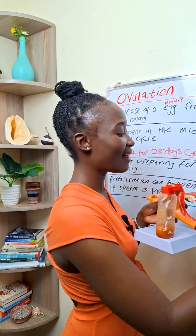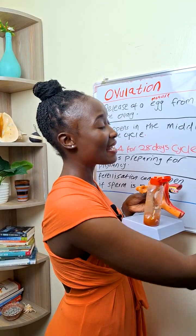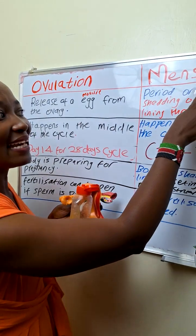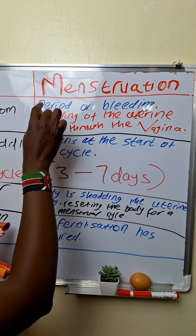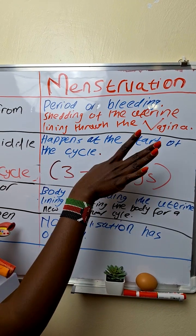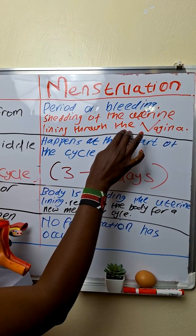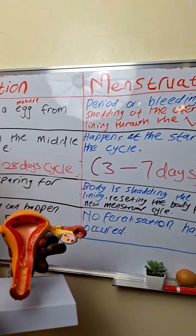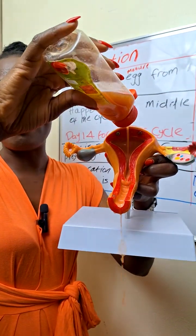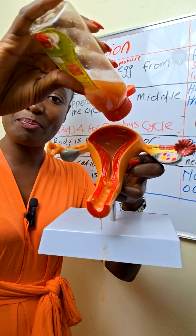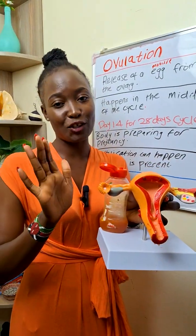On the other hand, menstruation is the bleeding, or the monthly bleeding, or what many people know as a period. That is the shedding of the uterine lining through the vagina. So basically that is the blood, or the monthly blood, that women experience. That is exactly what menstruation is.